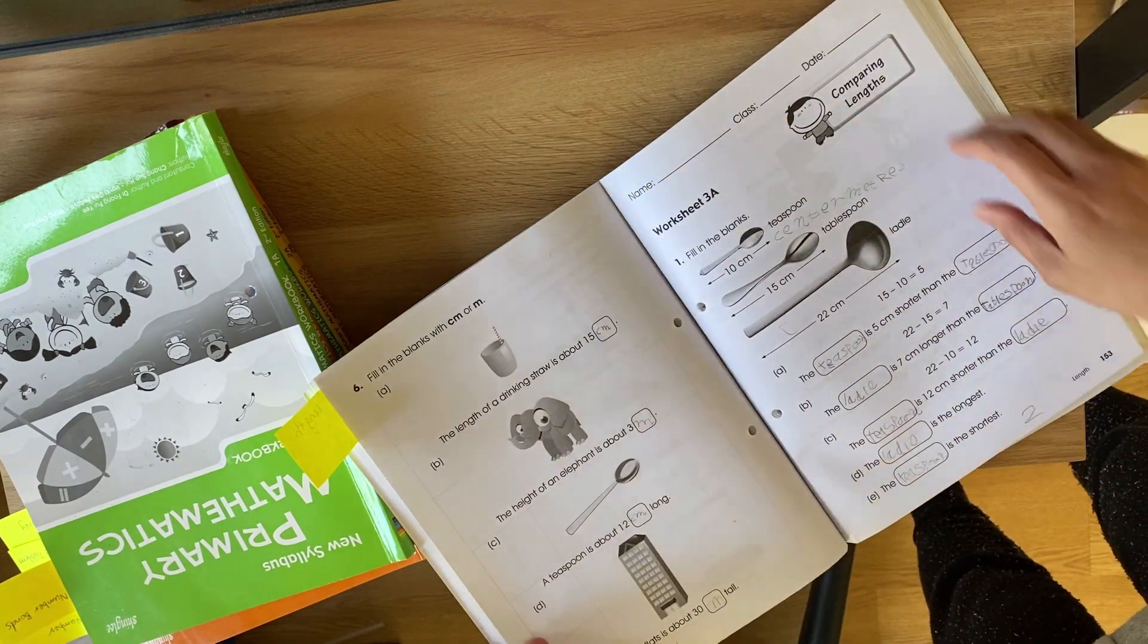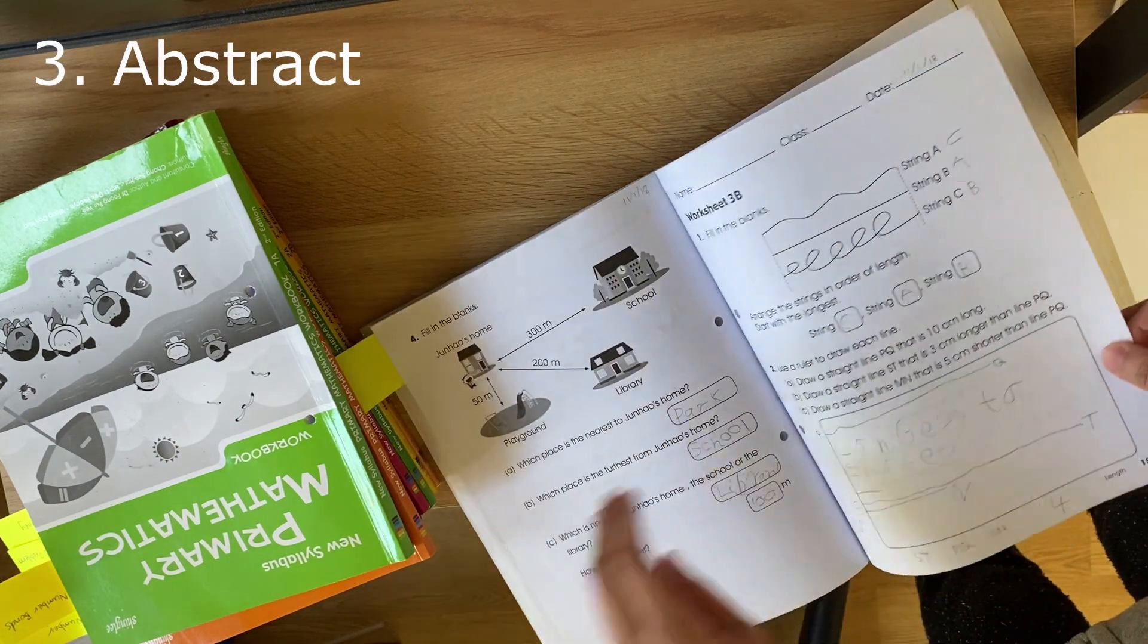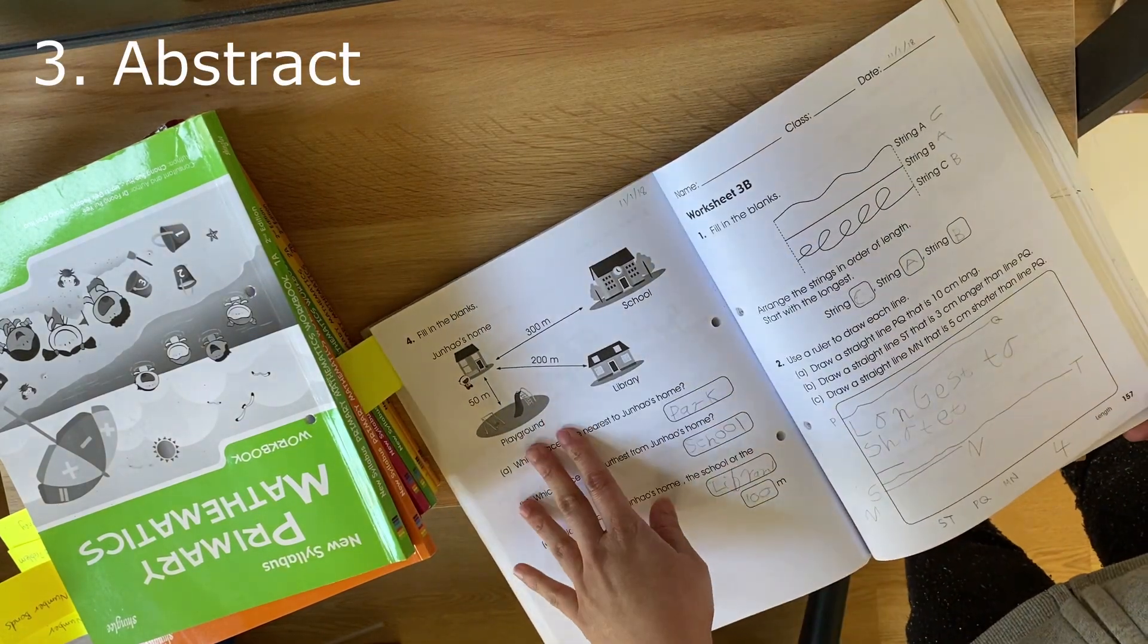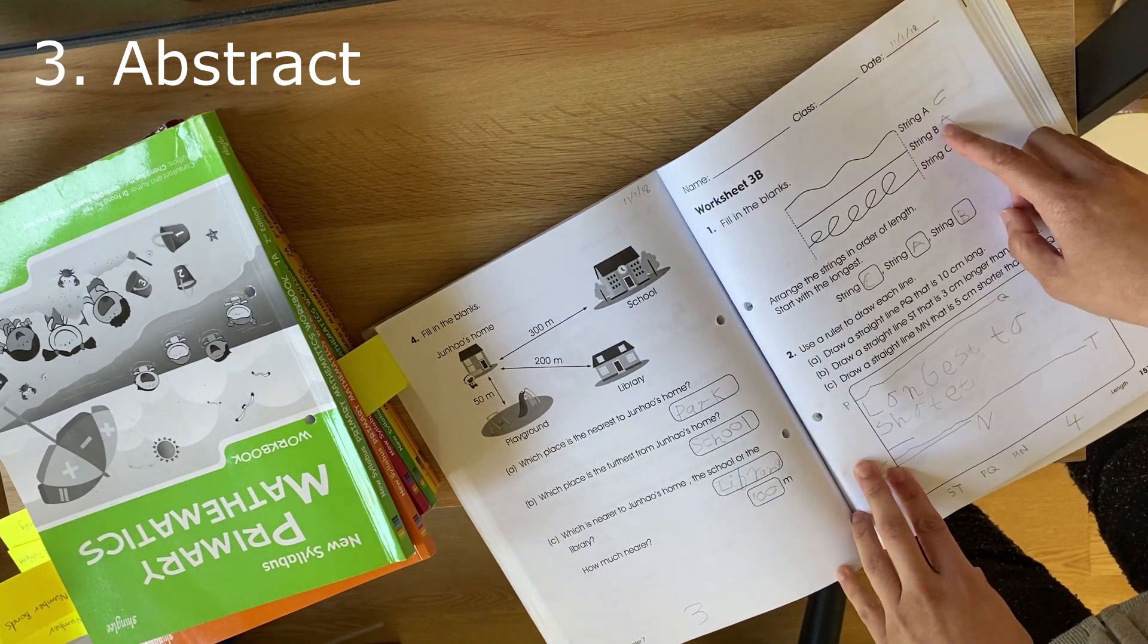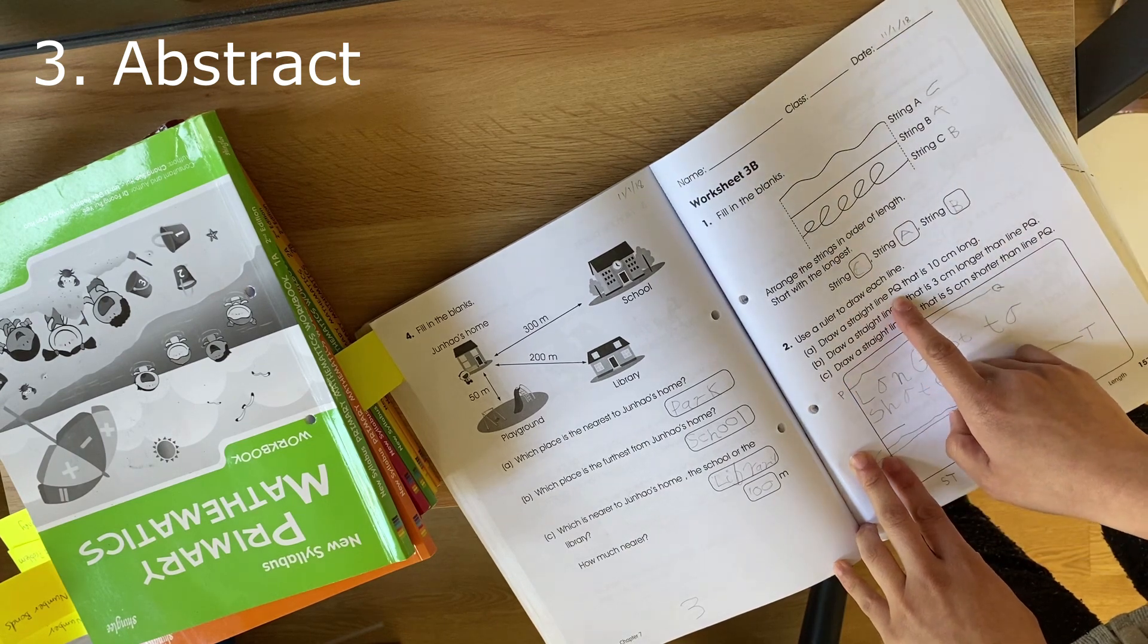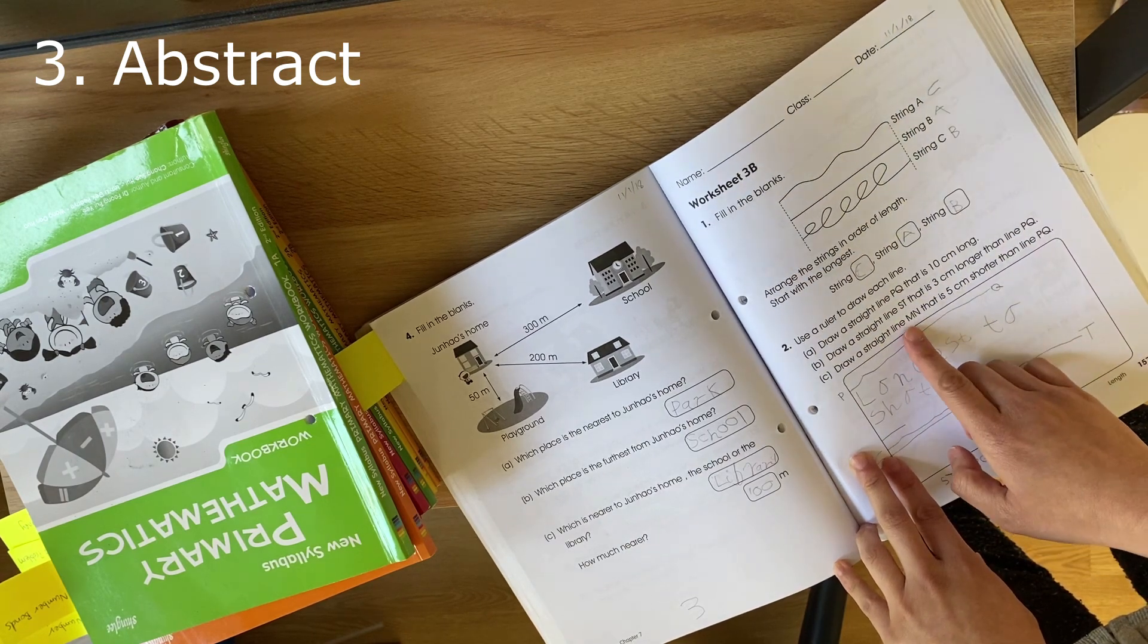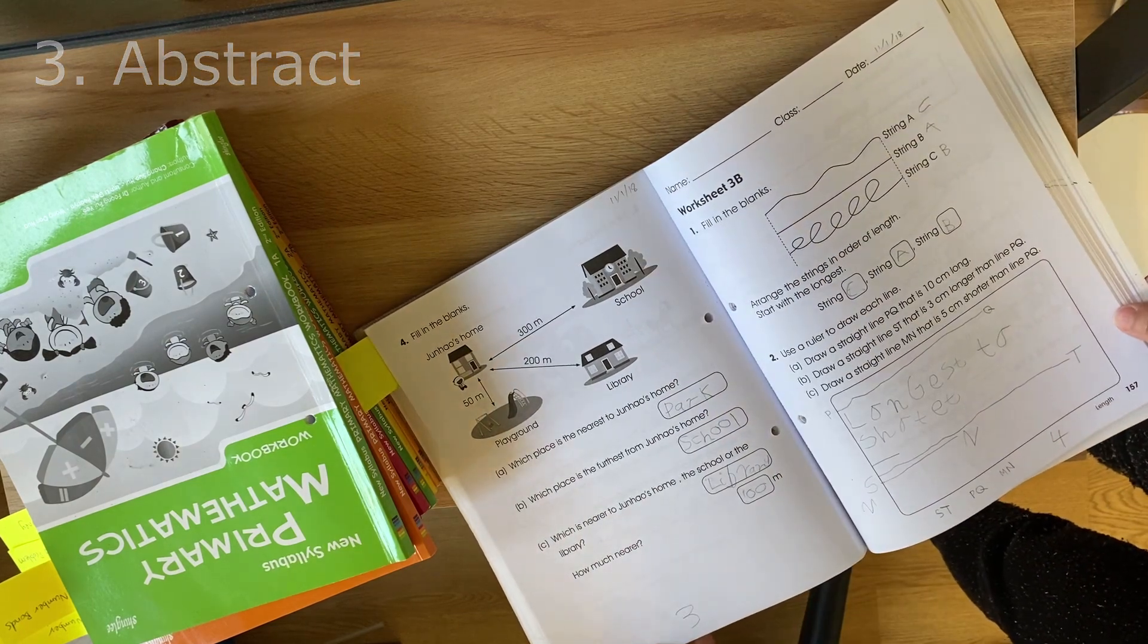When you're moving on to the abstract stage, you'll be replacing pictures with symbols. For example, you've got string A, string B, string C. You've got language like straight line PQ, straight line ST, straight line MN. So that would be the abstract stage.